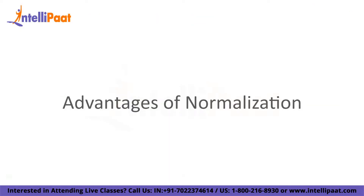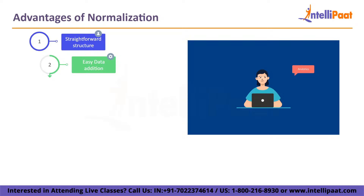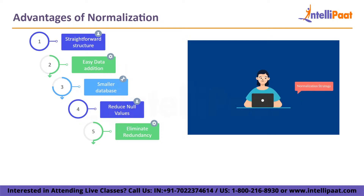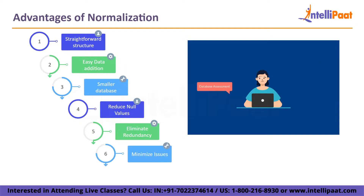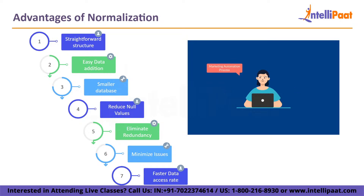The advantages of normalization include: the database structure becomes more comprehensible and straightforward; existing data can be added without impacting other results; it produces smaller databases; normalizing reduces null values; data duplication and redundancy can be eliminated; data modification issues are minimized or avoided; and smaller tables with rows fitting onto data pages allow for faster finding, sorting, and indexing.